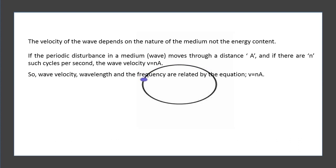So, wave velocity, wavelength, and the frequency are related by the equation v equals n times the wavelength. The time period T and the frequency f of the wave are related by the equation.